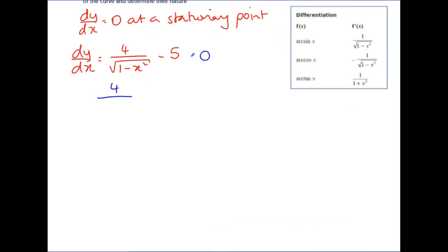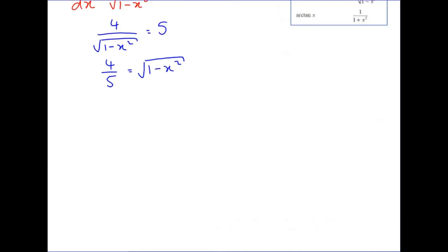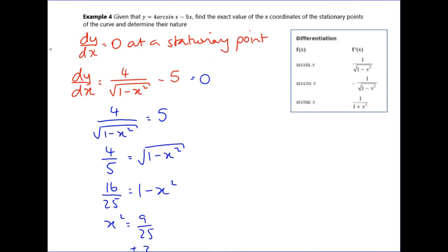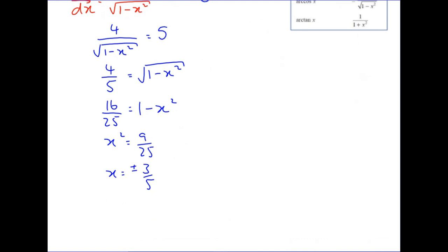Take the 5 across, multiply by √(1 - x²), and divide by 5 at the same time. Then square both sides to remove the square root, giving 16/25 = 1 - x². Rearranging, x² = 9/25. Both solutions are valid because x² appears inside the square root — no problem there.